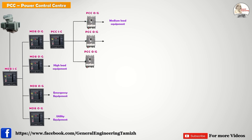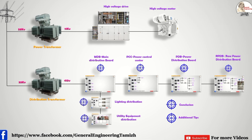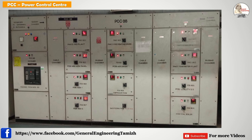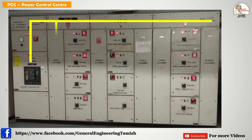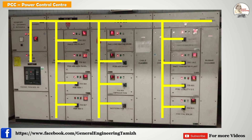Now let's move to panel identification. In the industry, when you see a panel, you have to differentiate which one is MDB and which one is PCC. This is the PCC panel — here you can see the Incomer Breaker, and its supply is coming from the MDB. The supply is distributed across the PCC panel via a bus bar connected to all outgoing feeders. The Incomer is an ACB and all outgoing feeders are MCCBs. From the MCCBs, all loads — medium kilowatt loads — are connected.